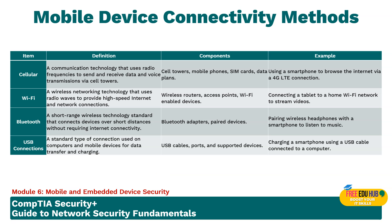Mobile device connectivity methods include cellular, Wi-Fi, Bluetooth, and USB. Cellular communication technology uses radio frequencies to send and receive data and voice transmissions, with components like cell towers, mobile phones, SIM cards, and data plans — you may use 4G or 5G technologies to access the internet. Wi-Fi is a wireless network technology using radio waves to provide high-speed internet connectivity, with components including wireless routers, access points, and wireless-enabled devices for streaming videos or using smart TVs.